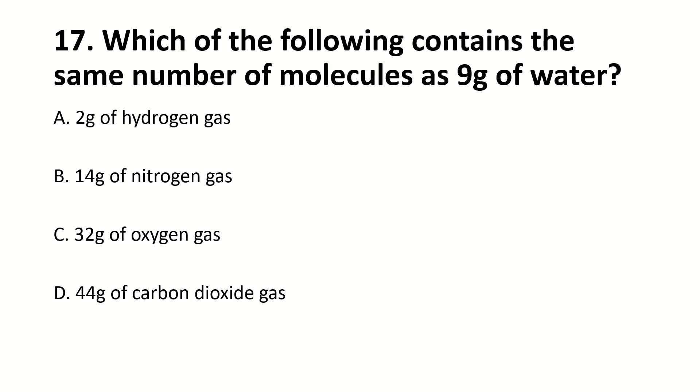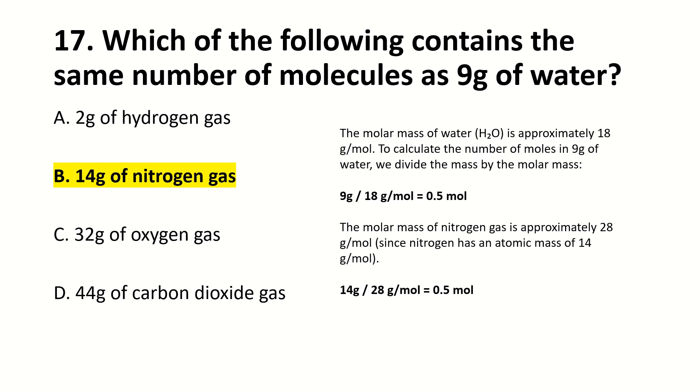Which of the following contains the same number of molecules as 9 grams of water? The answer is 14 grams of nitrogen. The molar mass of water H2O is 18 grams, but we have 9 grams.